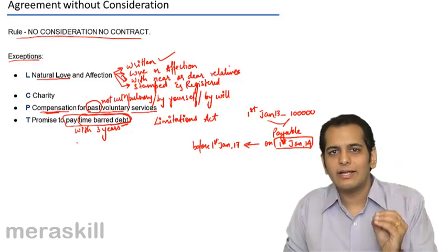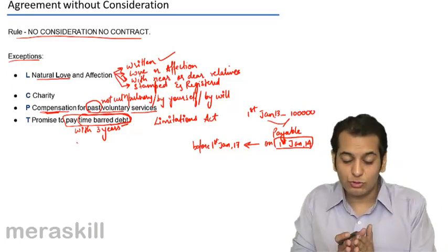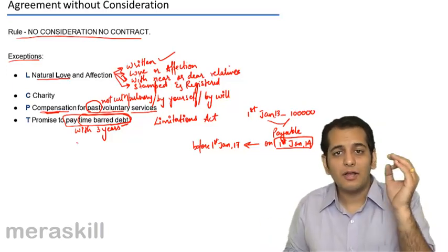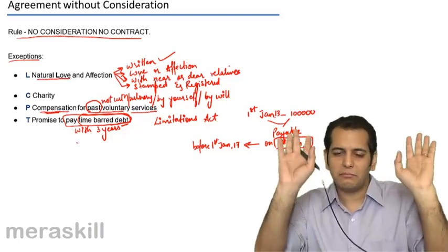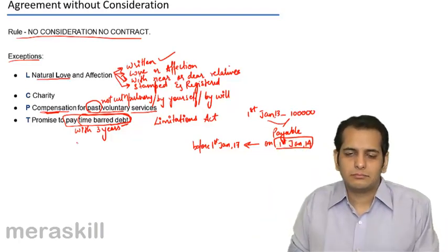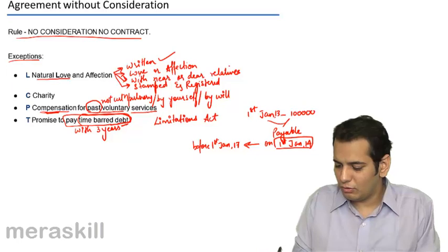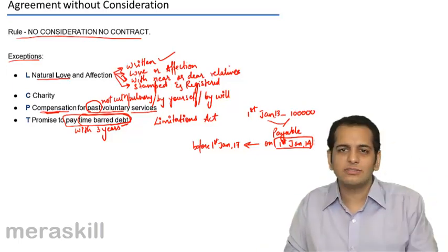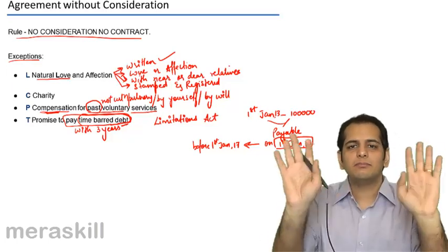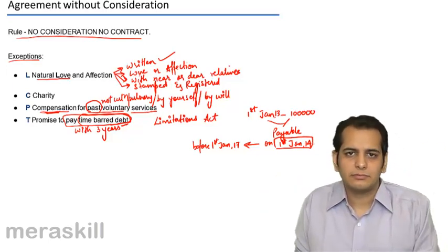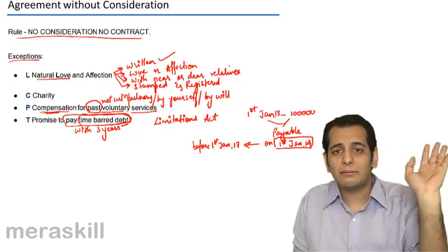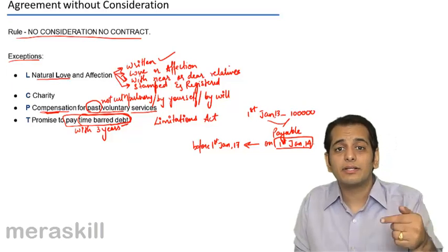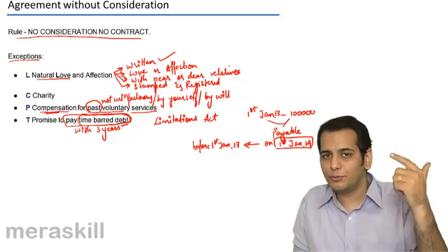In short, a debt which is not paid for more than 3 years and no action is taken on that, it becomes time barred. It was payable on 1st Jan 2014, no action was taken till 1st Jan 2017. This debt will become time barred. Now there is no liability on the part of debtor to repay it. Creditor cannot compel the debtor to repay it.